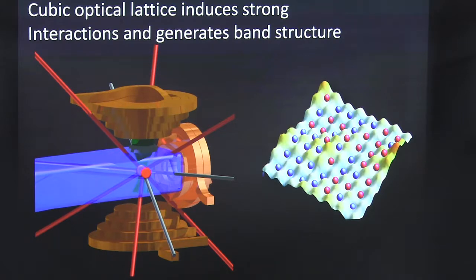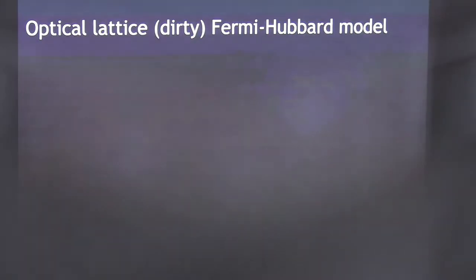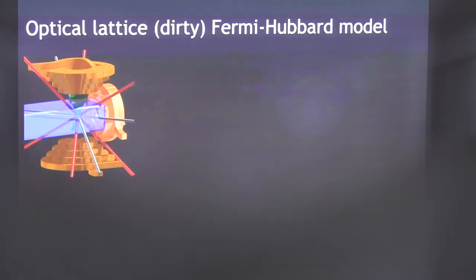That's actually data — that's what that disordered lattice looks like. We trap two spin states of potassium-40 in that disordered potential, and those form our pseudo-spin one-half system. So that system exactly realizes a disordered Hubbard model using those potassium-40 atoms. This is how we make our dirty Hubbard model that I just described to you.